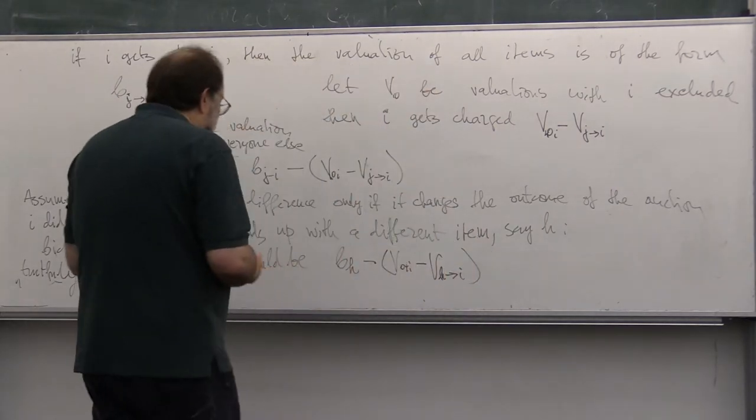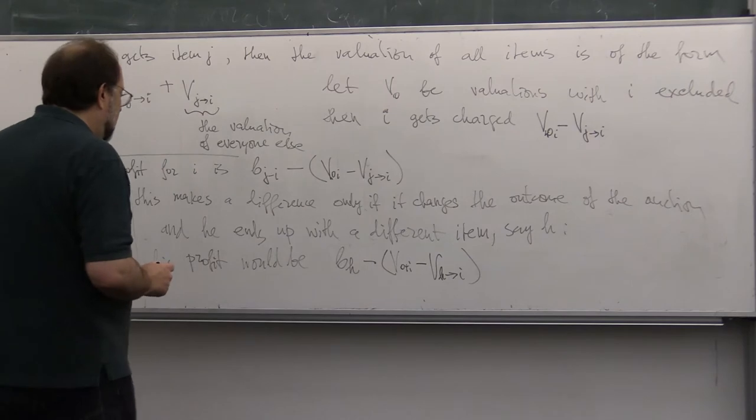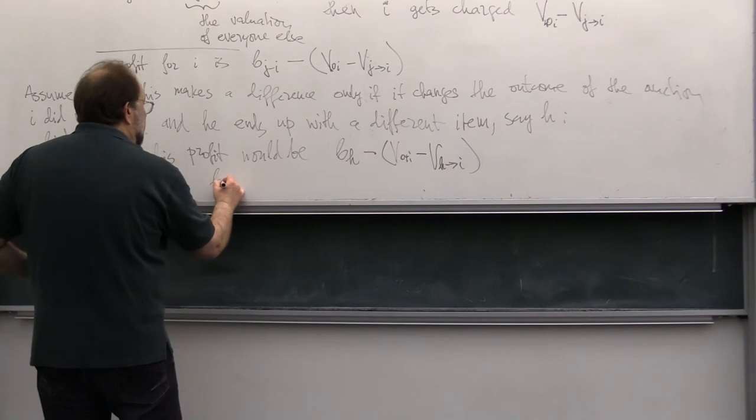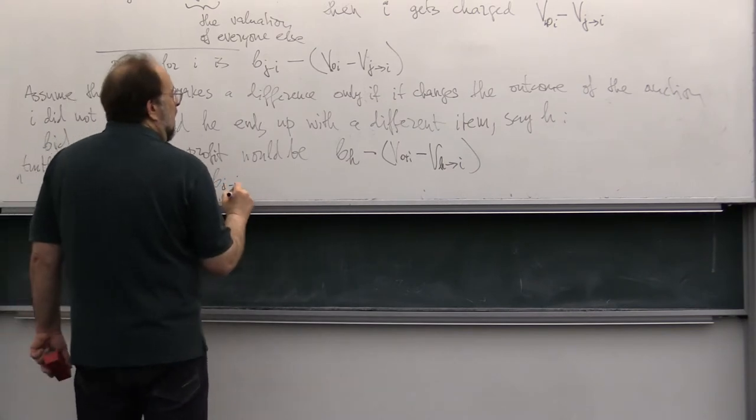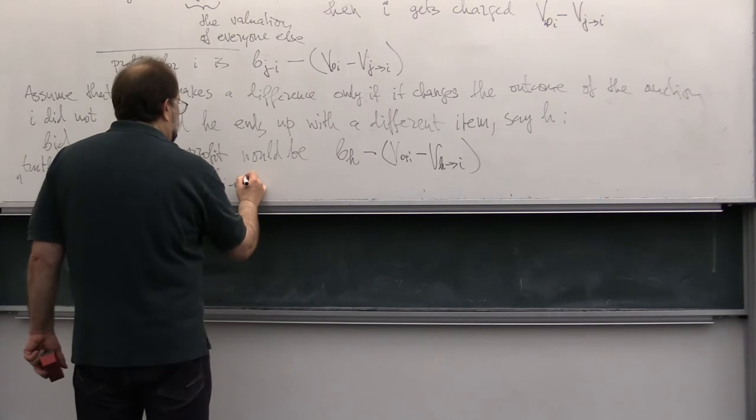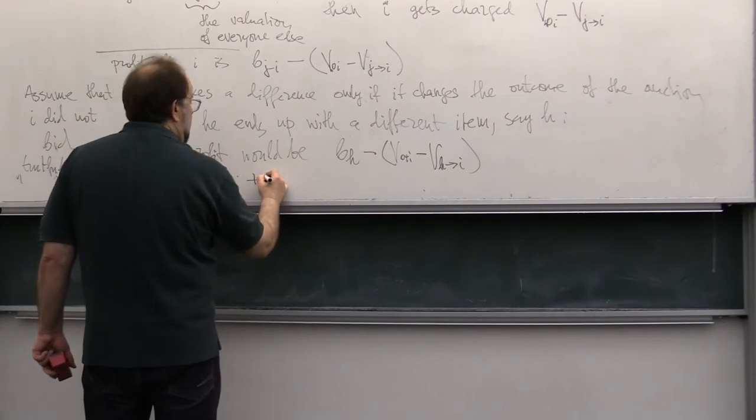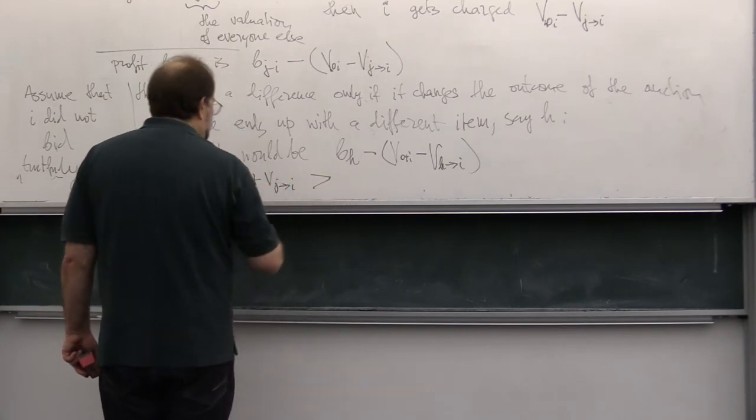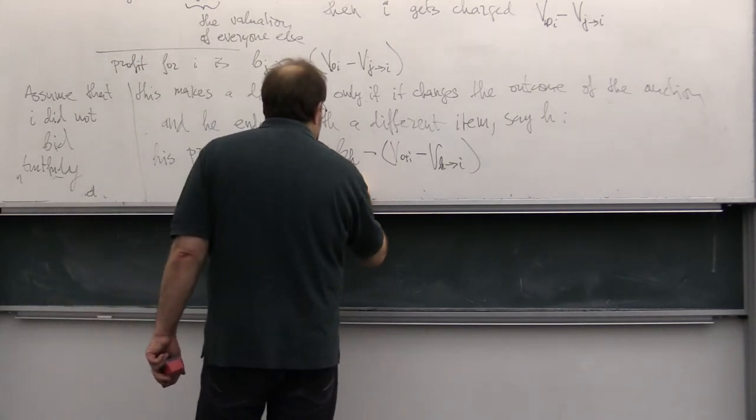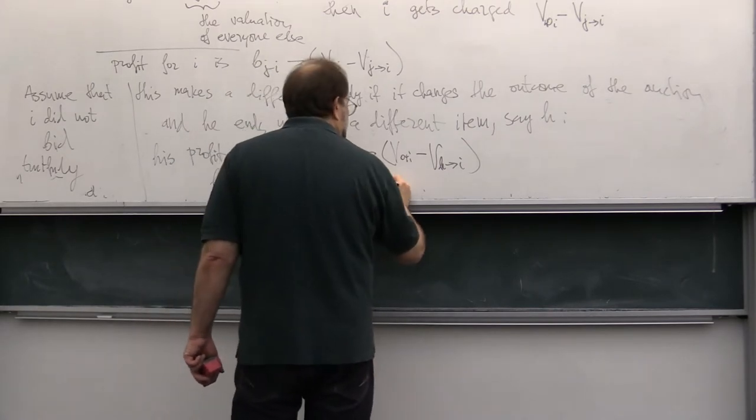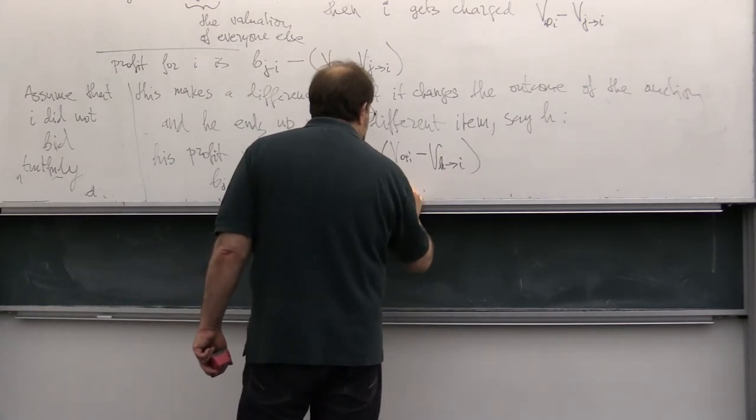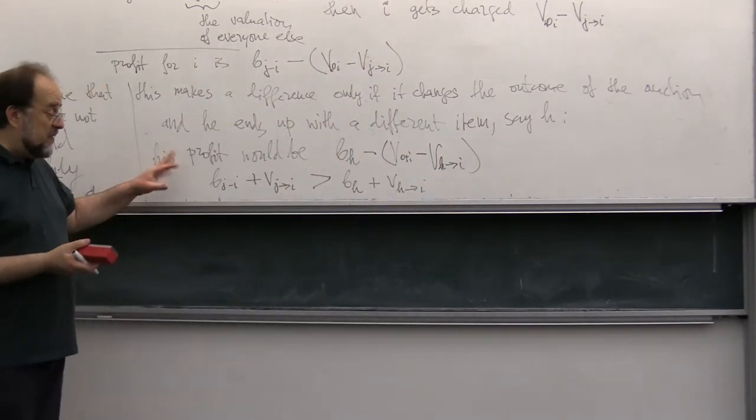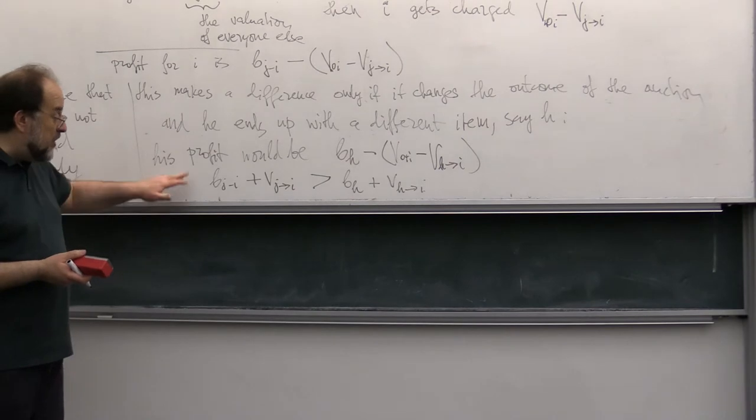Minus VH goes to I. Now, the trick is that we know that VJ minus I, plus VJ goes to I, must be bigger than VH plus valuation when H goes to I.